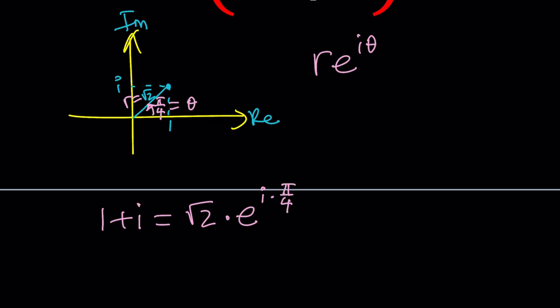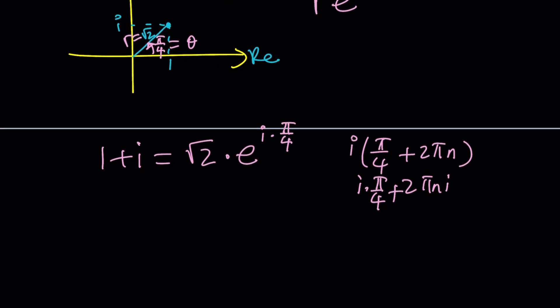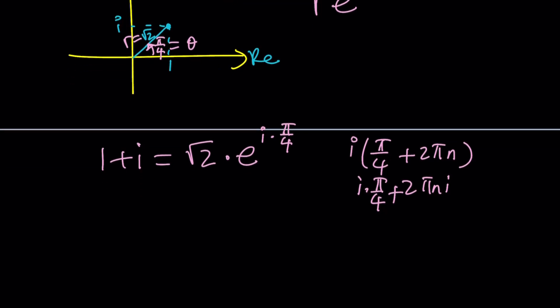Obviously, this is just one of the values of 1 plus i because we're allowed to add multiples of 2 pi to this. So instead of writing pi over 4, we could replace this with pi over 4 plus 2 pi n. And then when you multiply it by i, you're basically going to be adding 2 pi n i to this original value. So let's see how we can use this to solve for z.